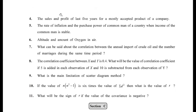Sales and profit: if sales increase, profit increases — positive correlation. Rate of inflation and purchasing power: if inflation increases, purchasing power decreases — opposite direction, so negative correlation. Altitude and amount of oxygen: as altitude increases, oxygen level drops — negative correlation.